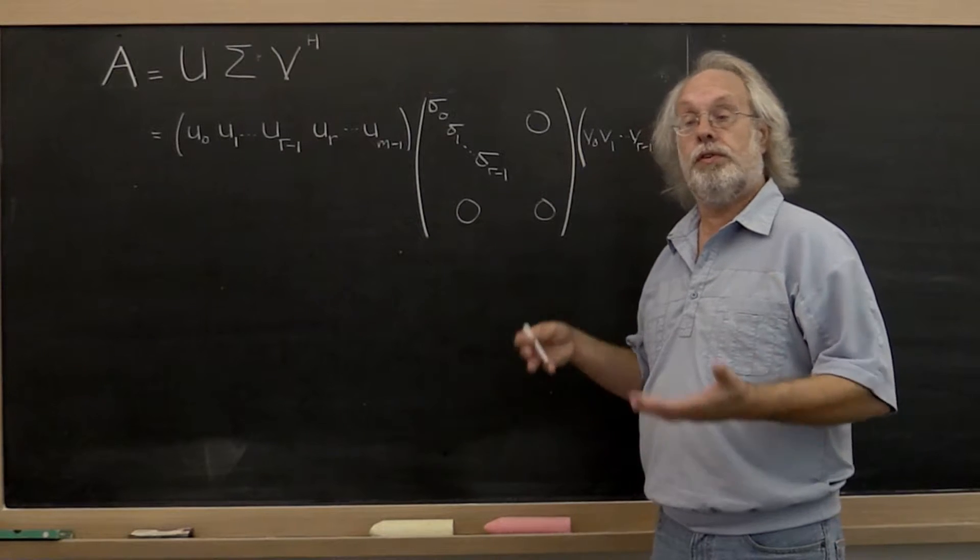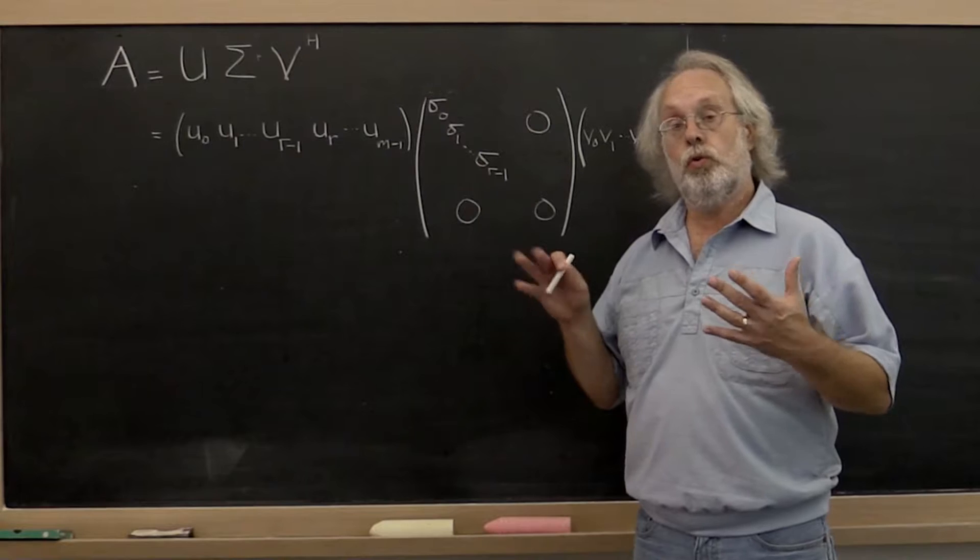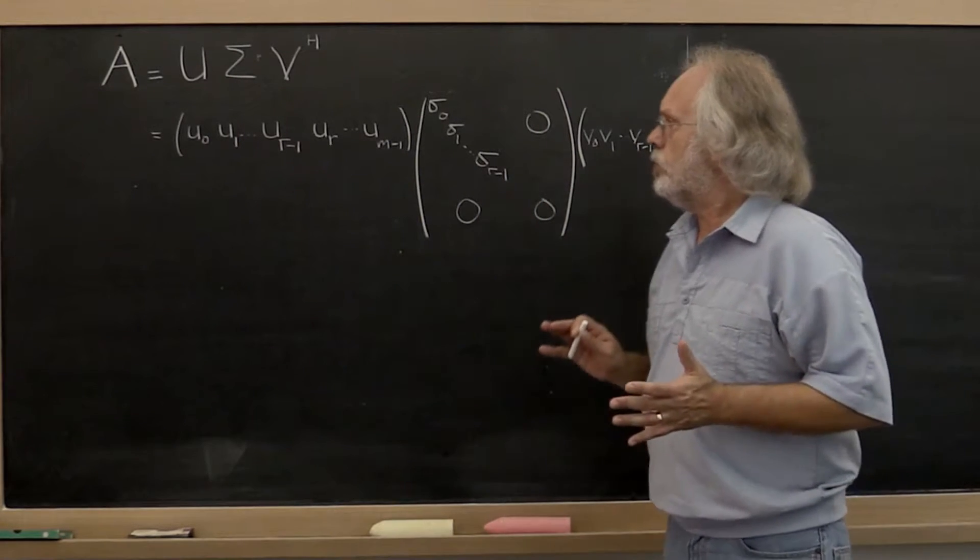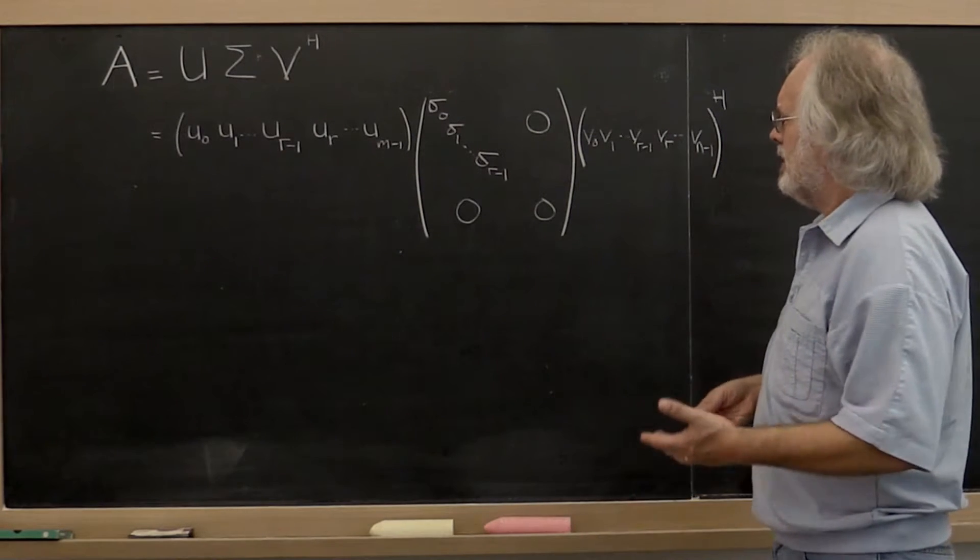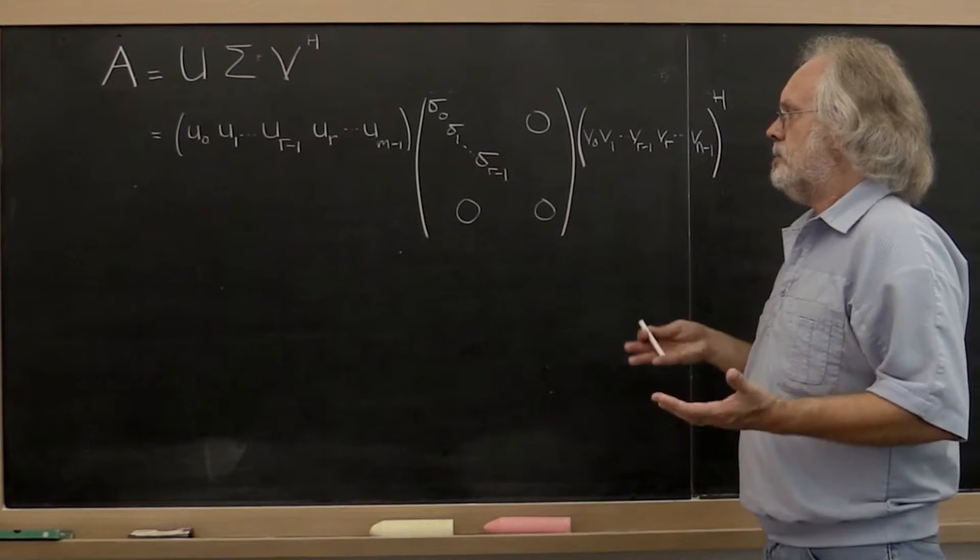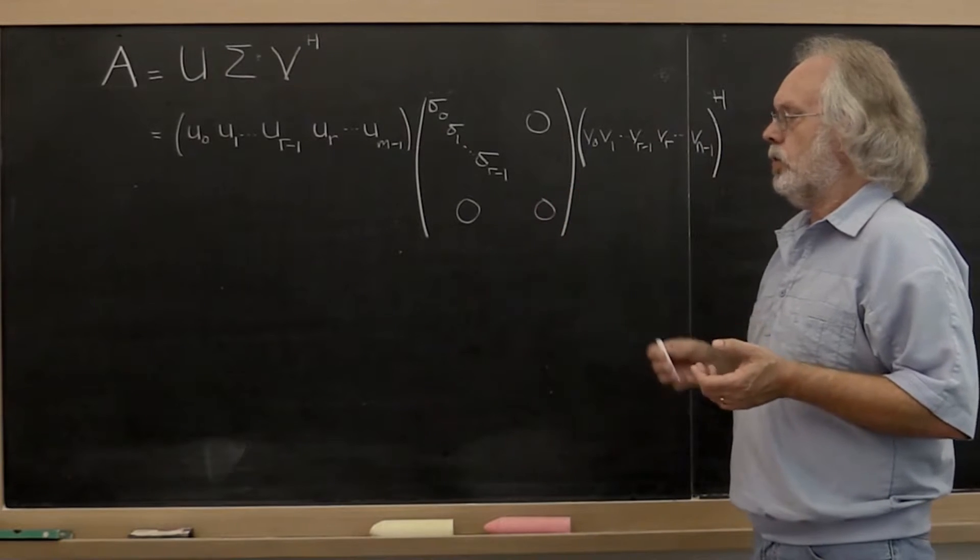By now you're quite familiar with the singular value decomposition. Now we're going to look at it slightly differently. In this course we like to slice and dice. We like to think in terms of regions of matrices as opposed to individual entries or even individual columns.